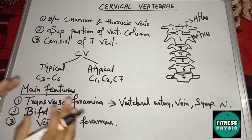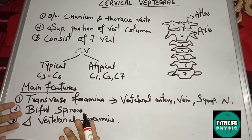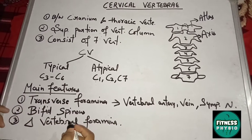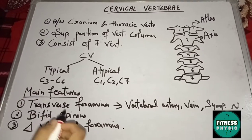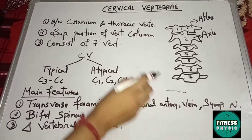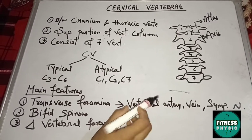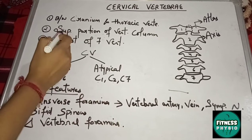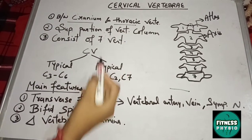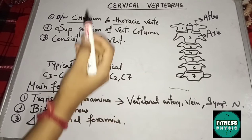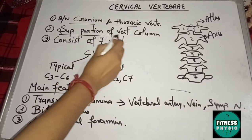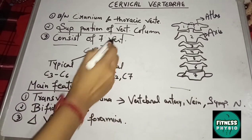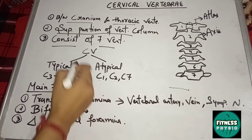Hello everyone, myself Soumya Tiwari, welcoming you all to my YouTube channel. Today's topic is on cervical vertebrae. As you can see in this diagram, there are a total of seven cervical vertebrae present. Cervical vertebrae are the superior portion of the vertebral column, present between the cranium and thoracic vertebrae.